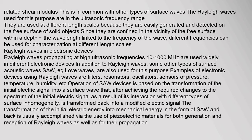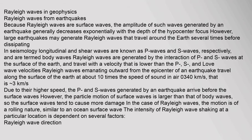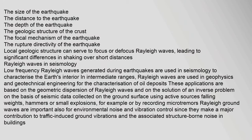Rayleigh waves from earthquakes: because Rayleigh waves are surface waves, the amplitude of such waves generated by an earthquake generally decreases exponentially with the depth of the hypocenter focus. However, large earthquakes may generate Rayleigh waves that travel around the Earth several times before dissipating. In seismology, longitudinal and shear waves are known as P waves and S waves respectively, and are termed body waves. Rayleigh waves are generated by the interaction of P and S waves at the surface of the Earth, and travel with a velocity lower than P, S, and Love wave velocities. Rayleigh waves emanating outward from the epicenter of an earthquake travel along the surface of the Earth at about 10 times the speed of sound in air. Factors affecting Rayleigh waves include: the size and depth of the earthquake, the geologic structure of the crust, the focal mechanism, and the rupture directivity. Local geologic structure can serve to focus or defocus Rayleigh waves, leading to significant differences in shaking over short distances.